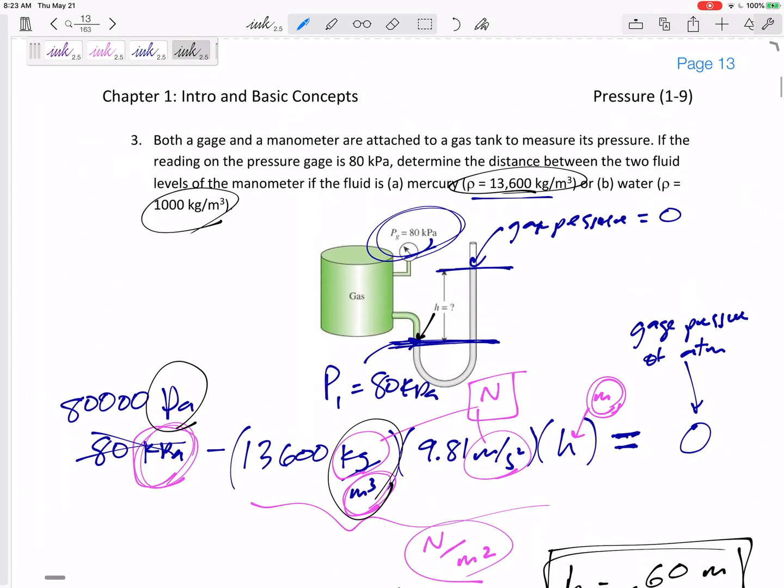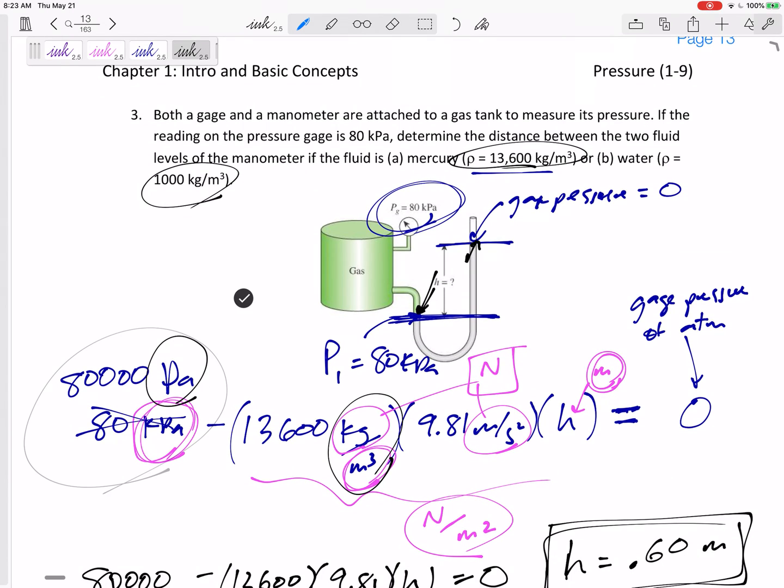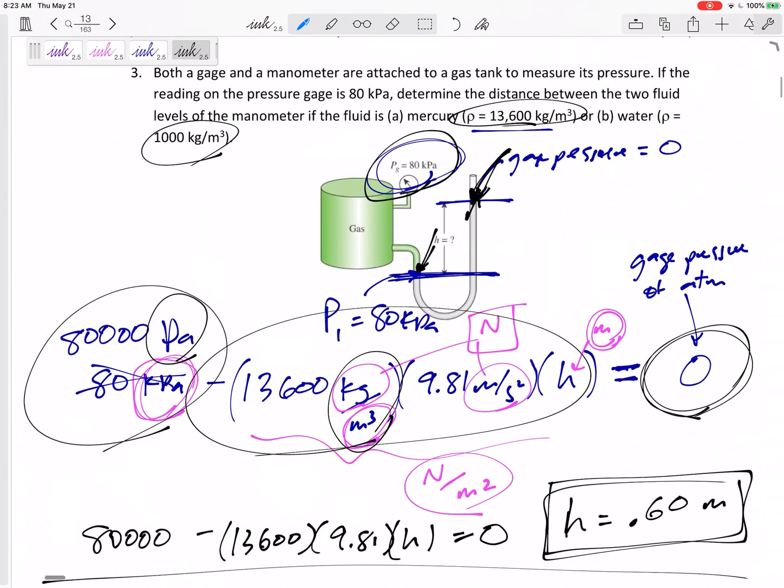Let's take a step back and look at what we did. We started at this point and we went to this point. Since we went up, we took our starting point, subtract rho g h, equals our ending point. Gauge pressure is the pressure compared to absolute pressure. If something is open to atmosphere, its gauge pressure is zero. Let me reiterate that: if something is open to atmosphere, its gauge pressure right there is equal to zero.